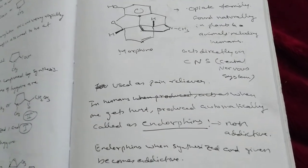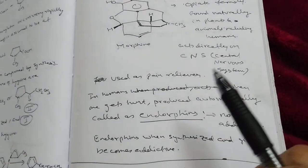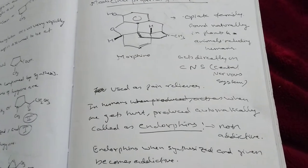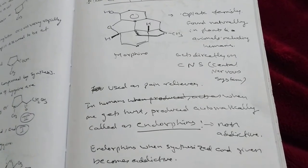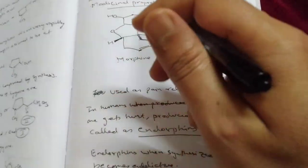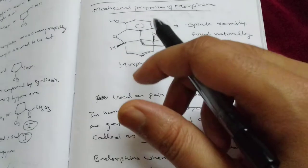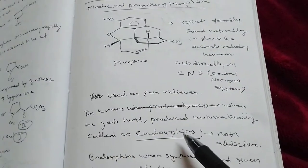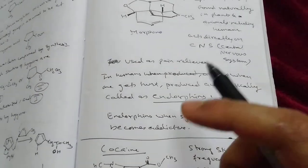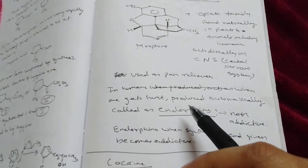It is found naturally in plants and animals including human beings. It attacks directly on CNS and used as sedative pain reliever. Even when you get small amount of hurt, immediately body produces this, not exactly morphine but little different structure, and it is called endorphins.